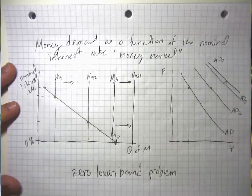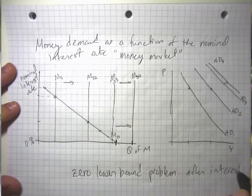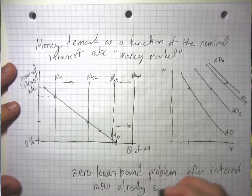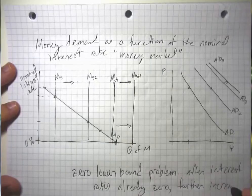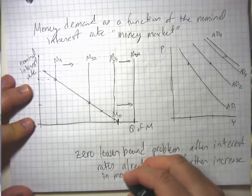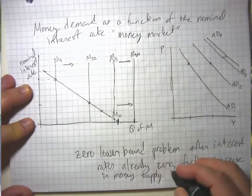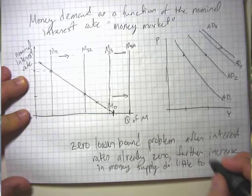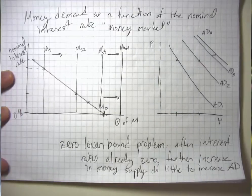So after interest rates are already at zero, further increases in money supply do little to increase aggregate demand. So that's the idea of the zero lower bound problem.